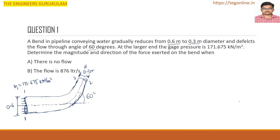The pressure P1 at the inlet equals 171.675 kN/m². For the leaving fluid, P2 is applied at the outlet. Velocity V1 aligns with the x-axis at the inlet, and velocity V2 at the outlet makes a 60-degree angle with the x-axis.